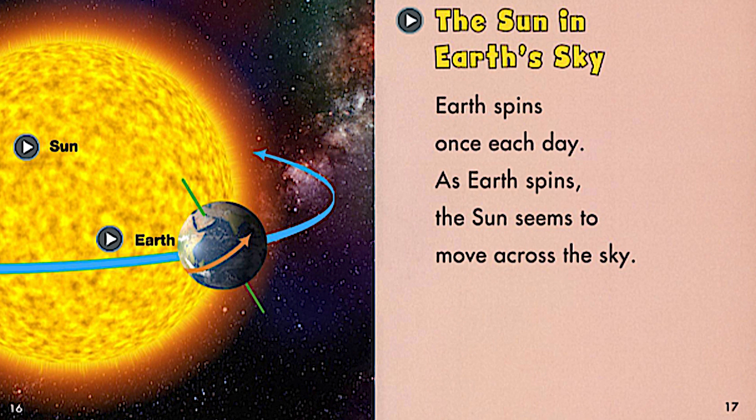Earth spins once each day. As Earth spins, the sun seems to move across the sky. Think of a top, a toy that you could spin in a circle. That's how our Earth spins on a daily basis.